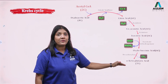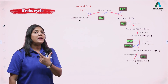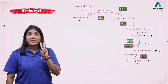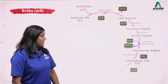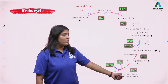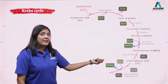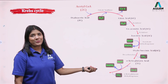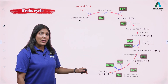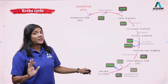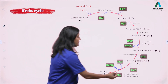Alpha-ketoglutaric acid will be acted upon by the dehydrogenase complex — meaning two simultaneous reactions occur: release of H+ and also release of carbon as CO2. Coenzyme A is added. The enzyme is alpha-ketoglutarate dehydrogenase complex. CO2 is released (decarboxylation), H+ is released (dehydrogenation), and NADH2 is formed — this is the second place where NADH2 is formed. The five-carbon alpha-ketoglutaric acid, after removing one carbon group, gives the four-carbon succinyl coenzyme A.